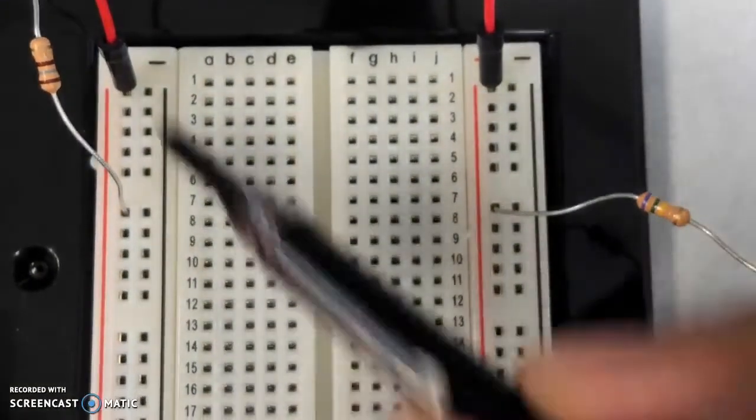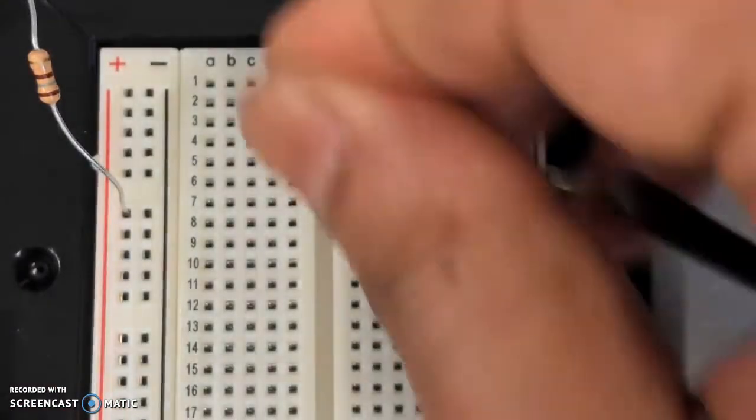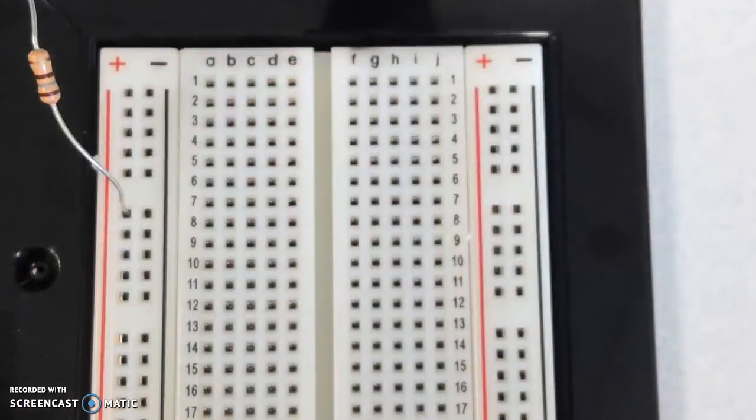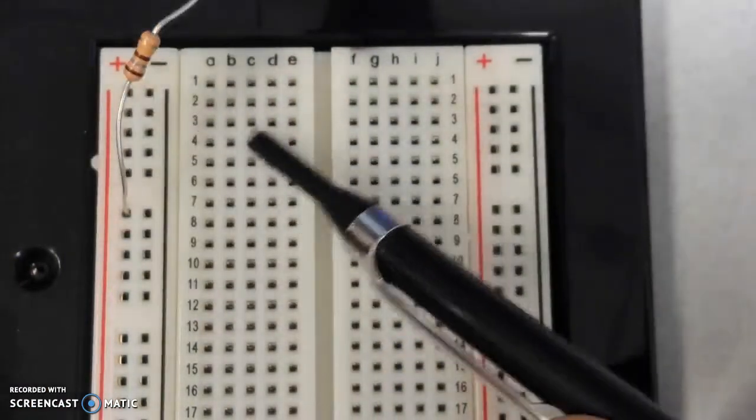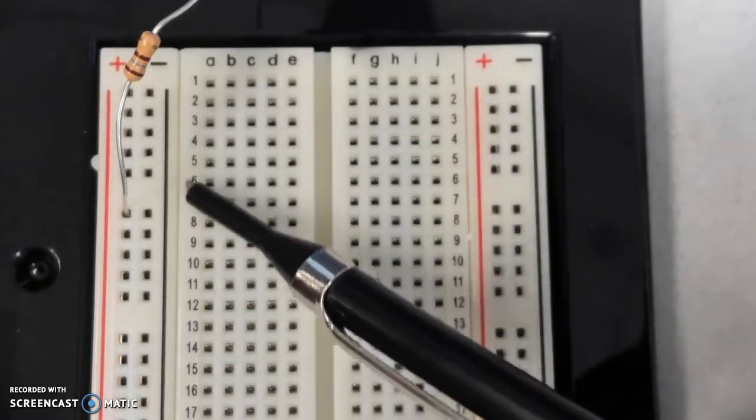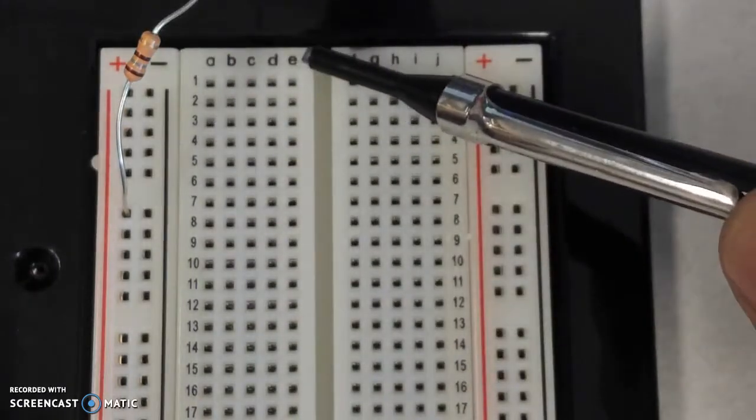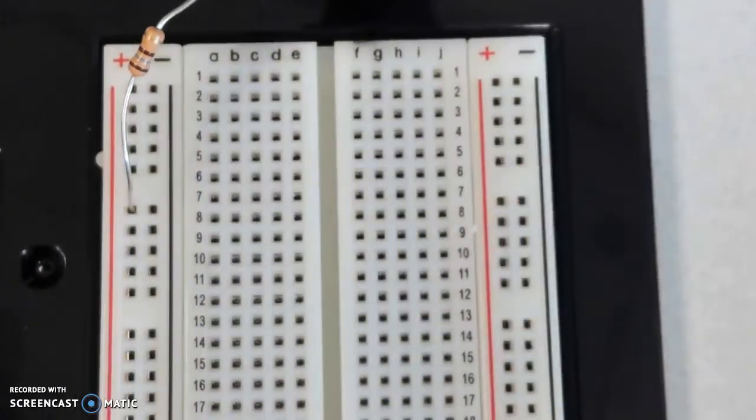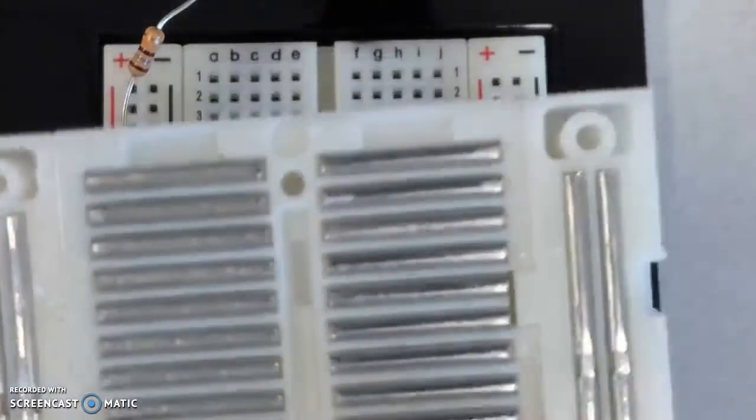So that's one way. On the breadboard, the power rails are vertically connected. Now you also see the rails that have A, B, C, D, E columns and F through J columns. The rows are labeled one, two, three, four, five, six, seven, eight, nine, and so forth. So the rows are numbered and the columns are lettered. A through E are again vertically connected, and if I look at the back again, peel the back of my breadboard and look at it, you'll see this is the situation.